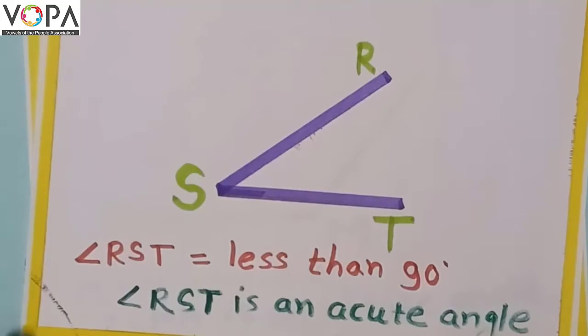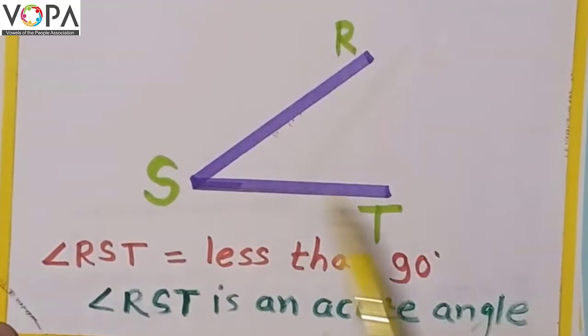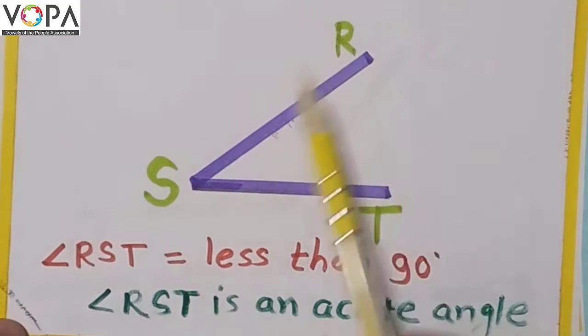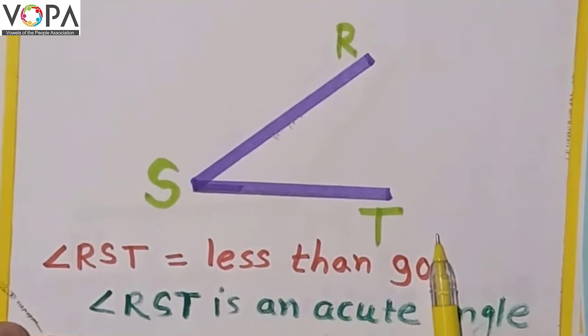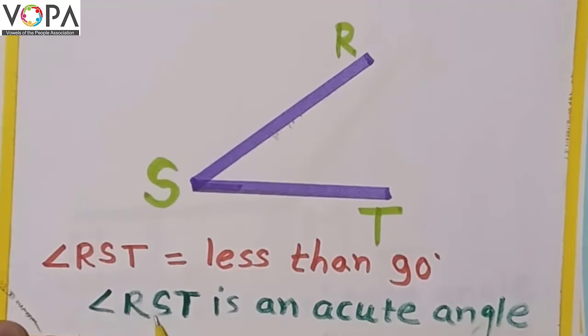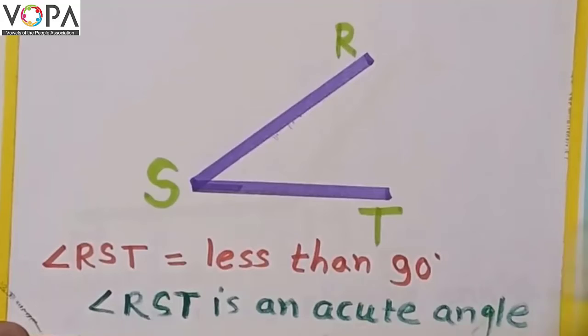Read the angle: angle RST. Angle RST measures less than 90 degrees, means less than a right angle. So angle RST is an acute angle. An angle which measures less than 90 degrees or less than a right angle is called an acute angle.